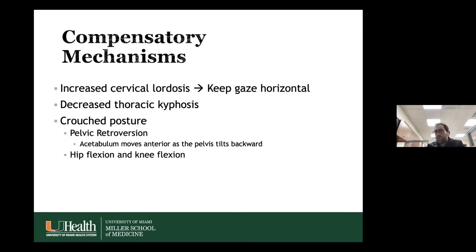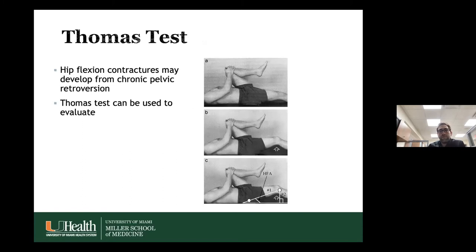Compensatory mechanisms you'll see clinically include increased cervical lordosis to maintain horizontal gaze as the patient falls forward, decreased thoracic kyphosis possibly from decreased lumbar lordosis, a crouched posture from pelvic retroversion, and hip and knee flexion. The Thomas test can help determine if a patient has hip flexion contractures — the patient lies supine and brings one knee forward; if the contralateral knee is elevated off the bed, there is tightness in the hip flexors.